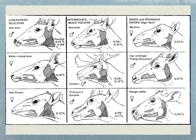This illustration shows the differences in the size of salivary glands between concentrate selectors, intermediate feeders, and grazers. In the top left, the roe deer's parotid gland is 0.22 percent of body weight. To the right, the red deer — an intermediate feeder — has a salivary gland of 0.08 to 0.1 percent, which is more than half the size of the concentrate selector's. On the right, the mouflon's salivary glands are much smaller compared to the rest.